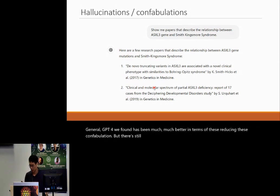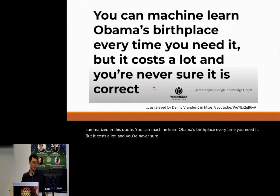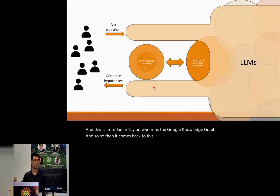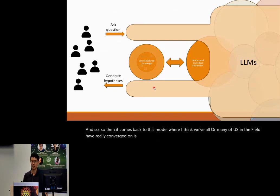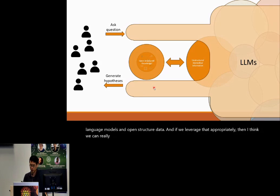It was best summarized in this quote: 'You can machine-learn Obama's birthplace every time you need it, but it costs a lot and you're never sure it is correct' — from Jamie Taylor, who runs the Google Knowledge Graph. This brings us back to the model where many of us have converged: there is actually a good synergy to be had between large language models and open structured data, and if we leverage that appropriately, we can build really powerful resources.